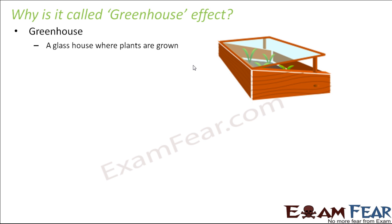In winters, this glass box works by allowing solar radiation to pass through it and enter inside. But the radiation is not allowed to get reflected back out. The plants and soil inside get heated up, and when they emit infrared radiation, that infrared radiation is not allowed to come out of the glass box. As a result, heat gets trapped inside, giving the plants more heat than is naturally available during winters.